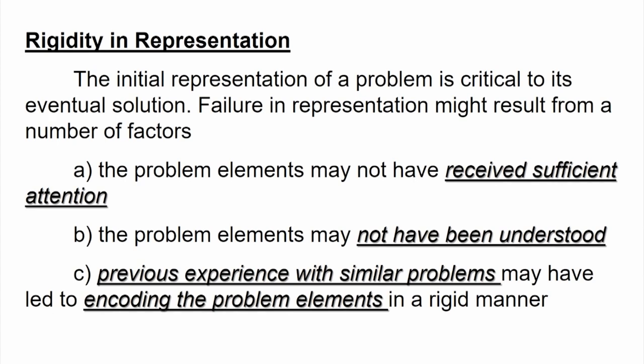Now, rigidity in representation. Solutions to problems or hindrances of problem solution may arise because people get rigid about representing a problem. The initial representation of the problem is critical, and failure to represent correctly may lead to several factors. One of the first factors is that sufficient attention has not been given to the problem. When a problem is presented and you do not pay sufficient attention, you will not be able to identify the key elements of the problem, which leads to representing it in the incorrect form, and a solution will most probably not be arrived at.